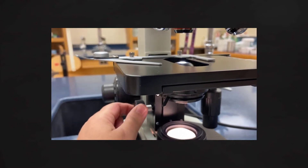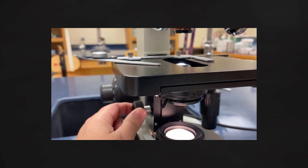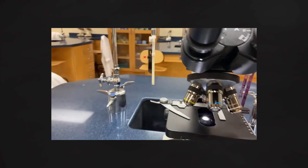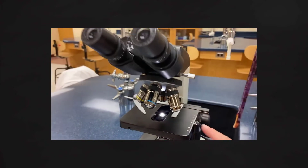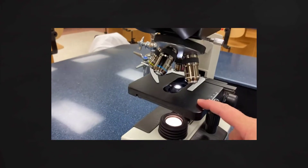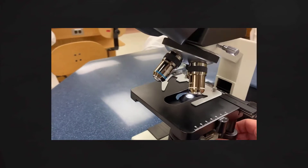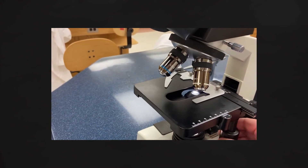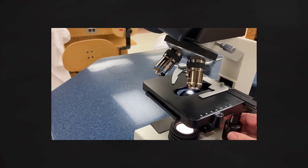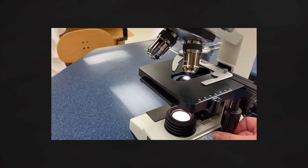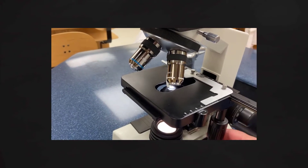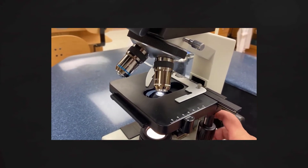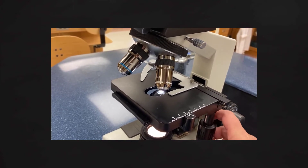Sometimes our specimen is not fully located where the light source is, making it difficult to see, so we need to adjust the stage to move the specimen. The stage can move up and down and also left to right with these knobs. Note that if you're moving it up, through the scope it appears to move down — it's the opposite. The same goes for right and left.